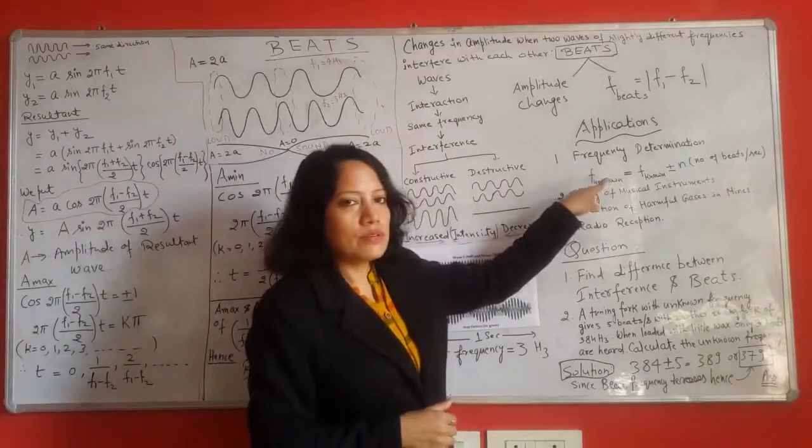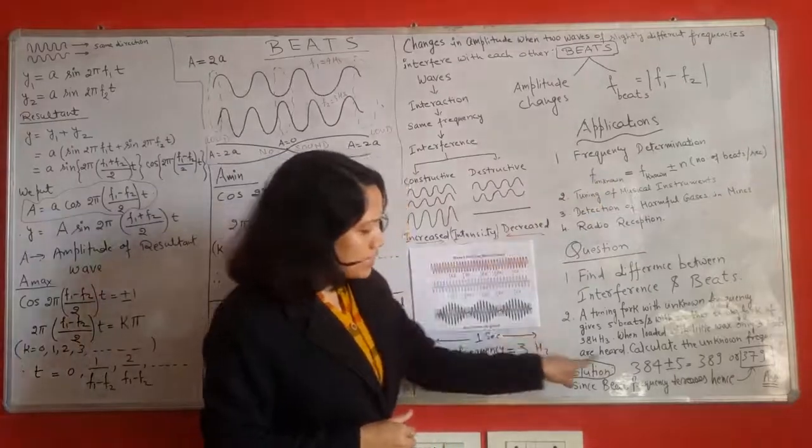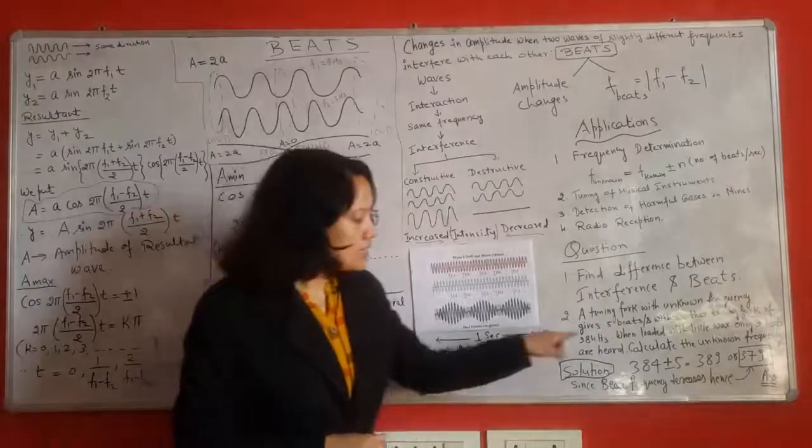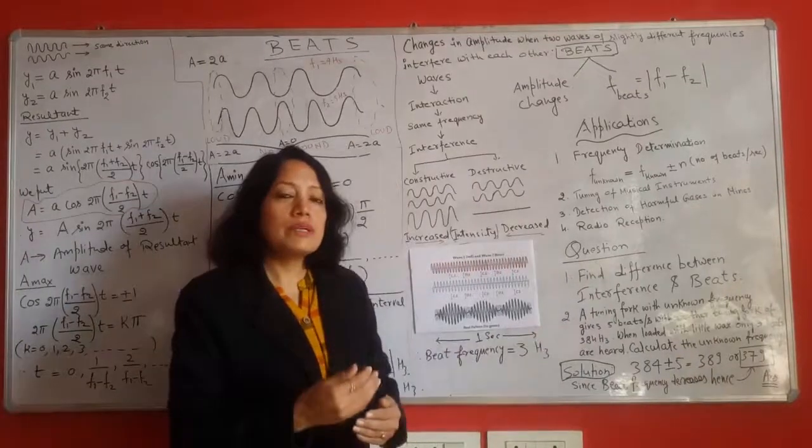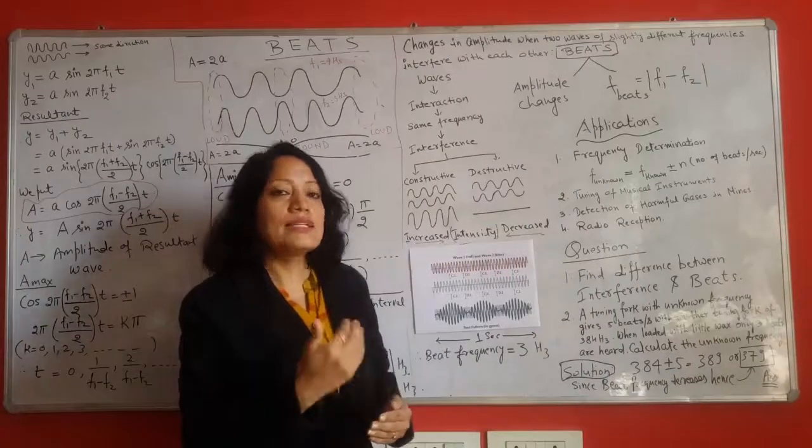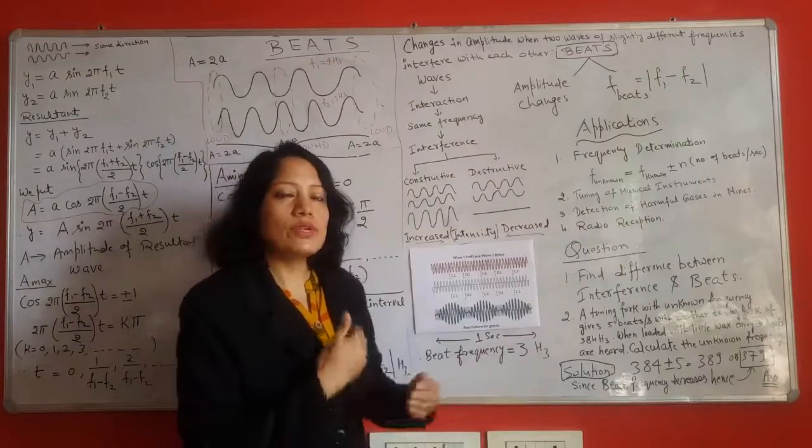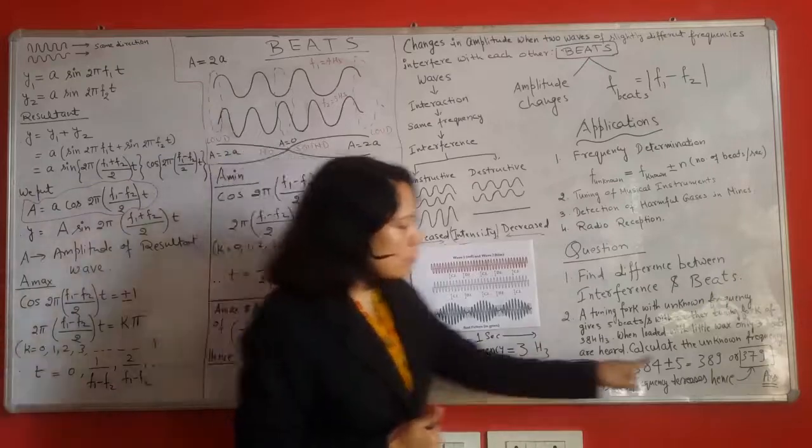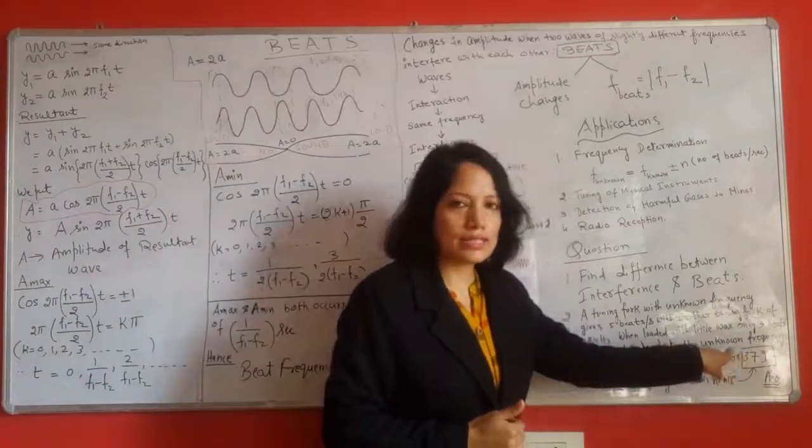We will use the same formula for that purpose and using that formula we will have 2 different values of frequencies: 389 and 379. Now as in this question the information is that the number of beats per second decreases when the fork is loaded with little wax, it means that the frequency would also be less. Hence we will go with the number 379 in this case.